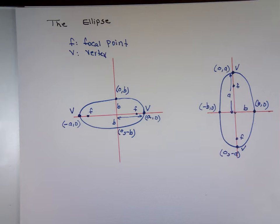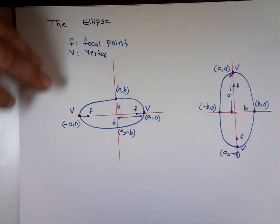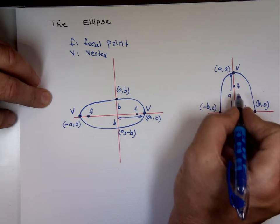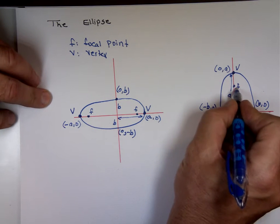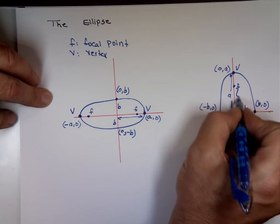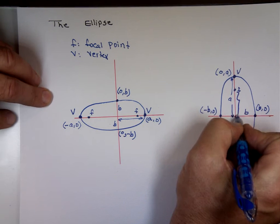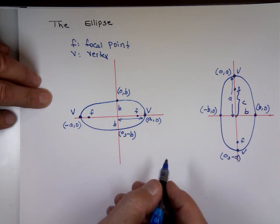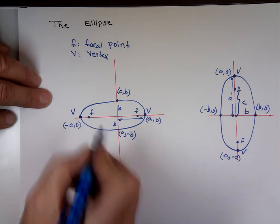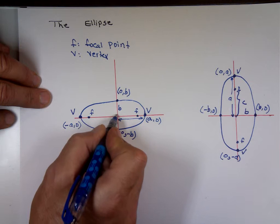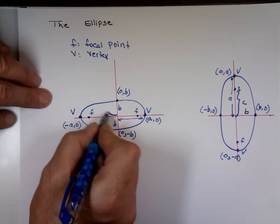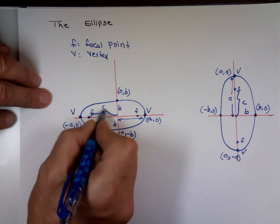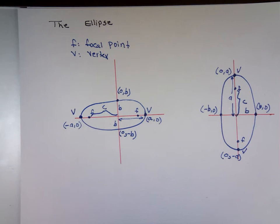The distance from the origin to the focal point is known as C.